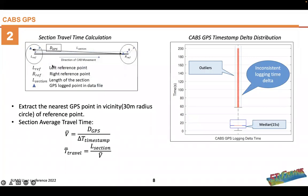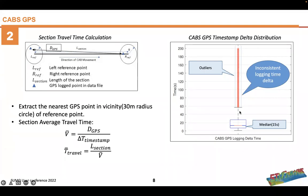This slide presents the simple algorithm logic we used for travel time calculation. We divided the complete network into 12 sections, with left and right reference points. Because GPS logging was not very accurate, we used a 30-meter circle near the reference point to calculate the GPS timestamp, and then calculated the average velocity. Using that average velocity, we calculated the average travel time for each section. On the right-hand side, you can see the delta distribution between timestamps. There was a lot of inconsistency in the logging data with many outliers from the median, because GPS was not logged properly. That's why we had to use a larger radius circle to calculate from the reference point.